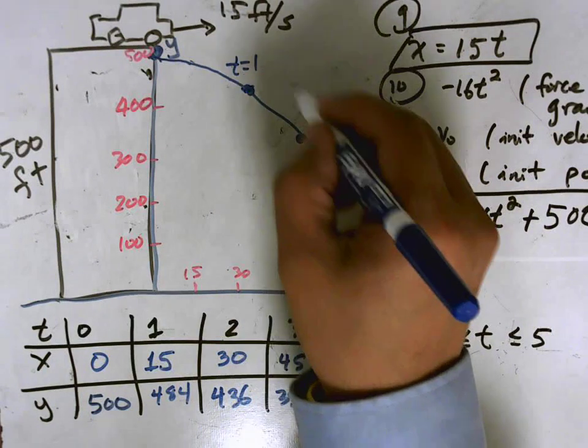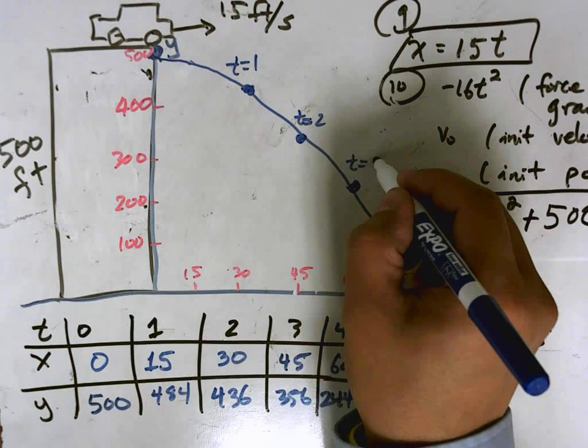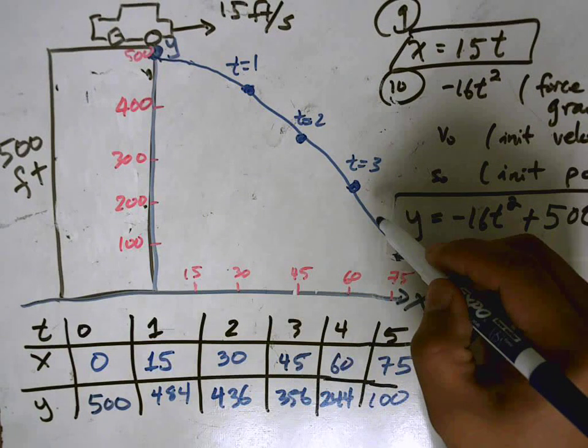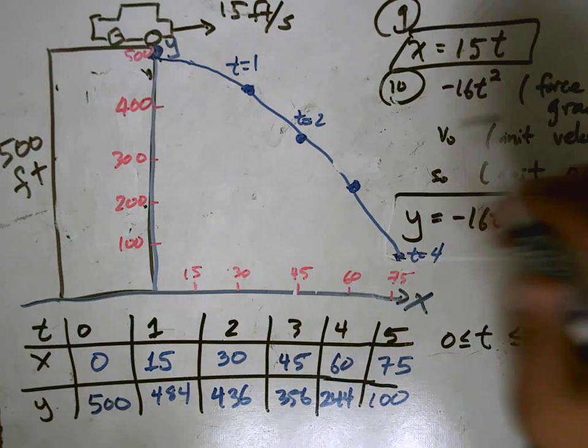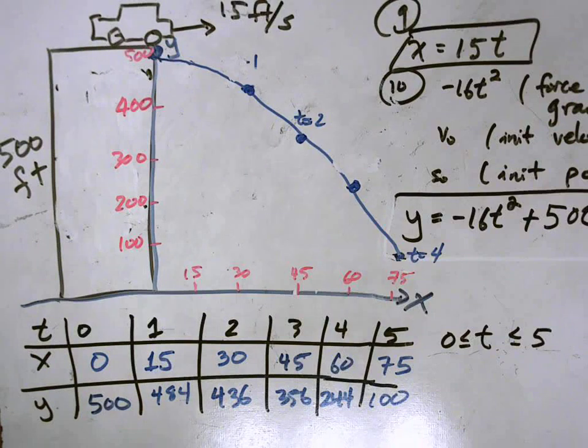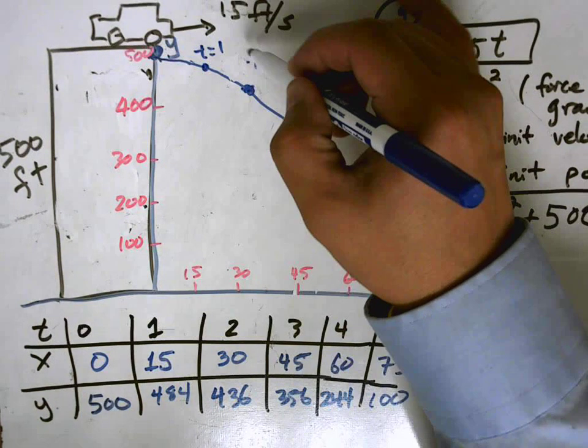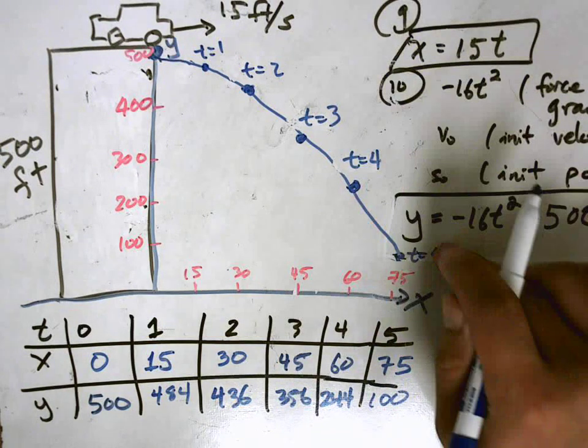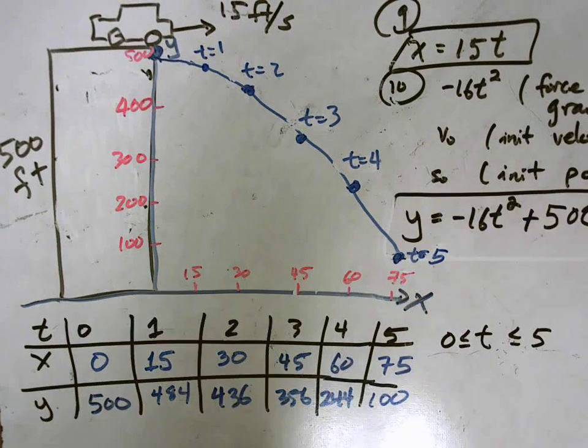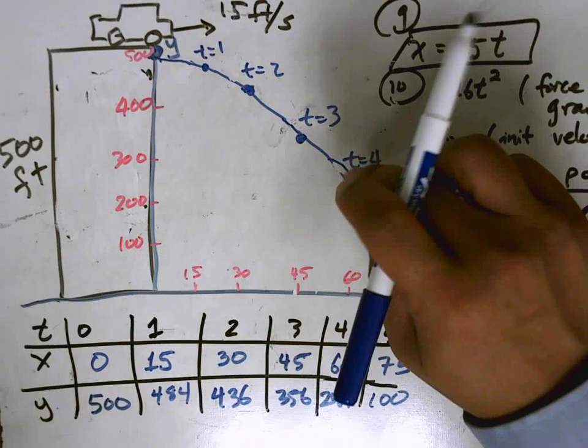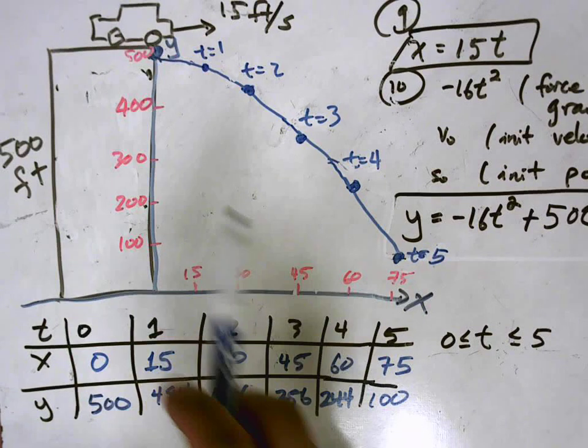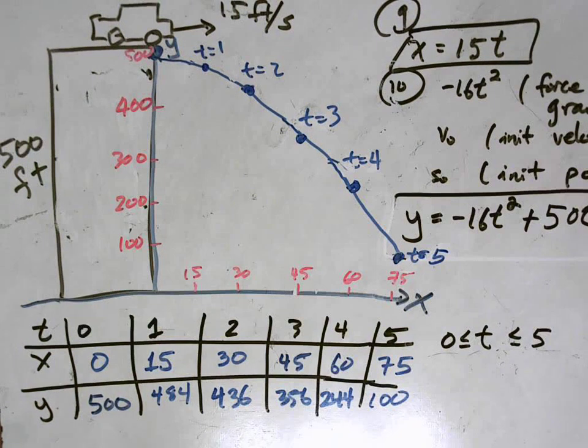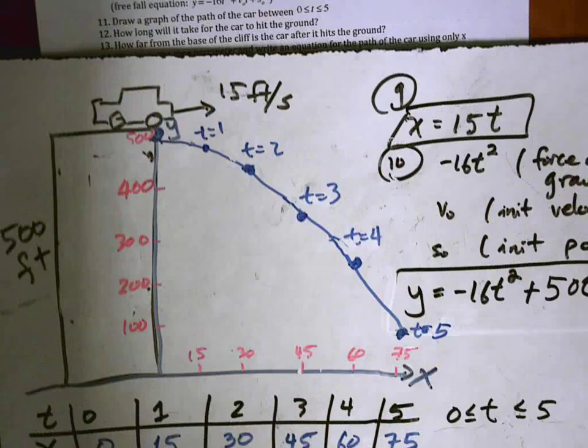This is t equals 1, t equals 2, t equals 3, t equals 4. Sorry, seems like I've missed one here. So 45, 15, 484 should be up here. So this is t equals 1, t equals 2, t equals 3, t equals 4. And finally, t equals 5 is this point right here. So this graph right here, it's a little bit crude, but it gives us a pretty good idea of what's happening to this car. So the car is flying straight off the cliff. And it keeps on moving forward, but at the same time, gravity is pulling on it, so it's going downwards. And that answers the question about drawing a graph of the car.